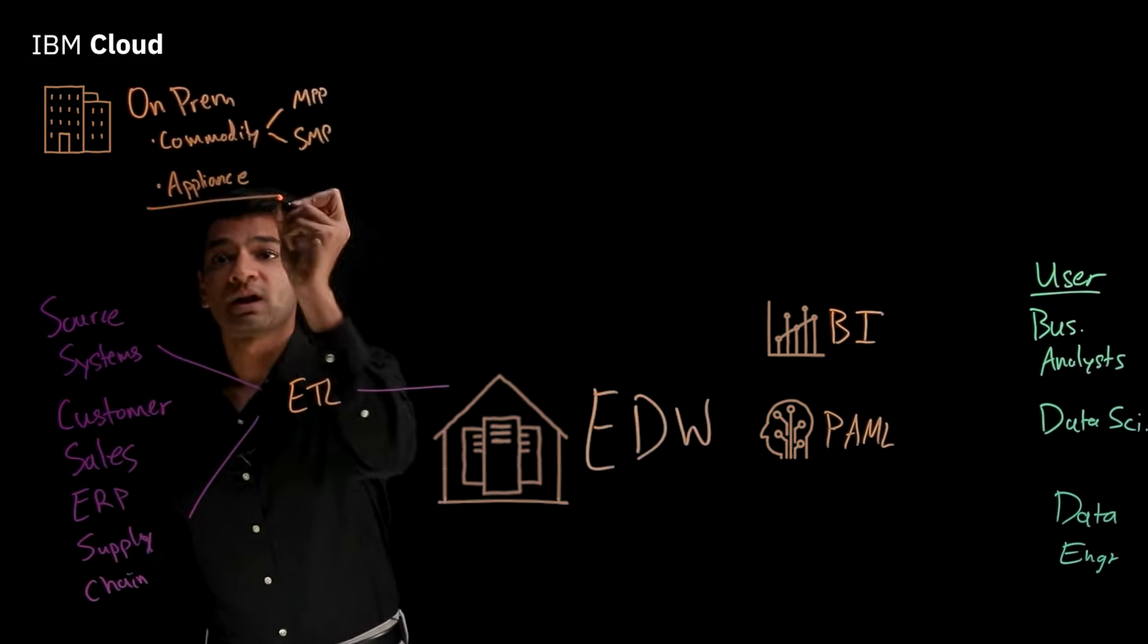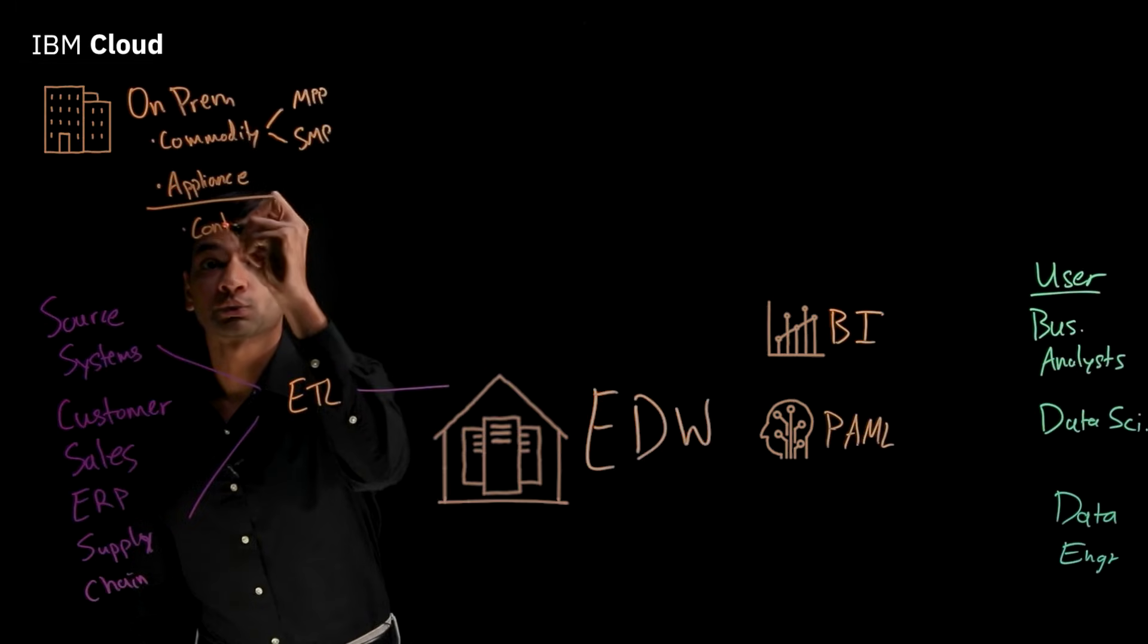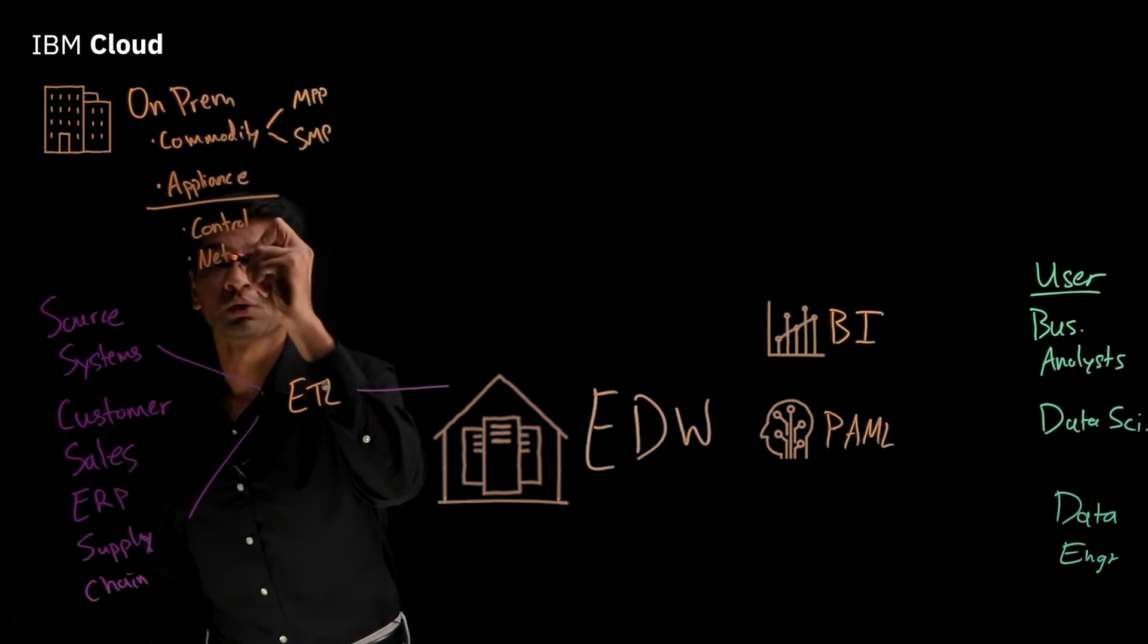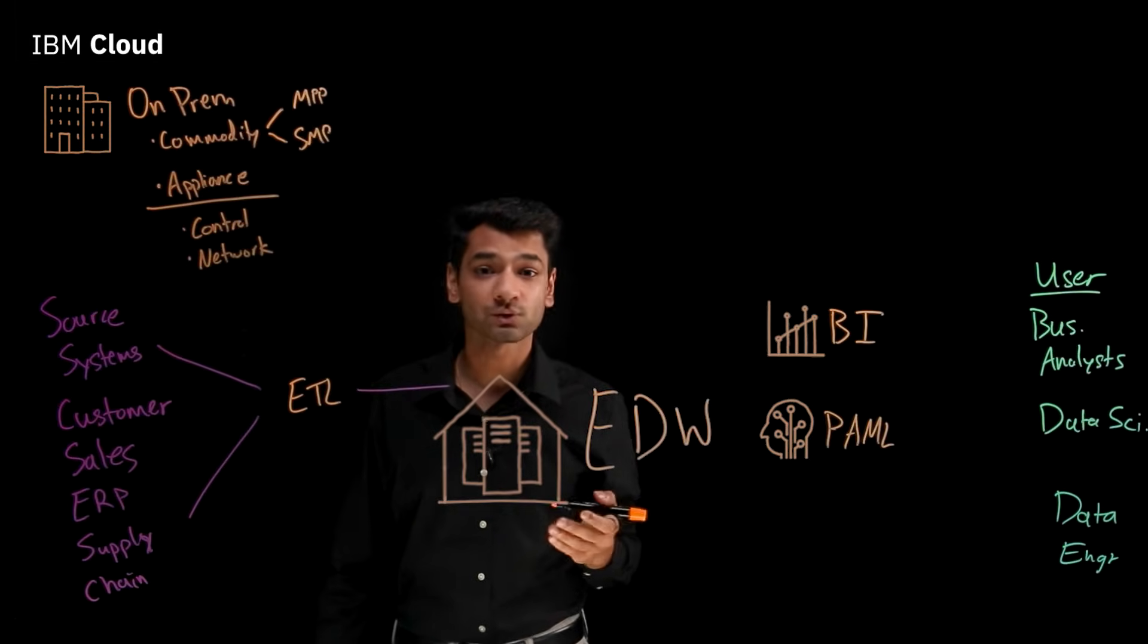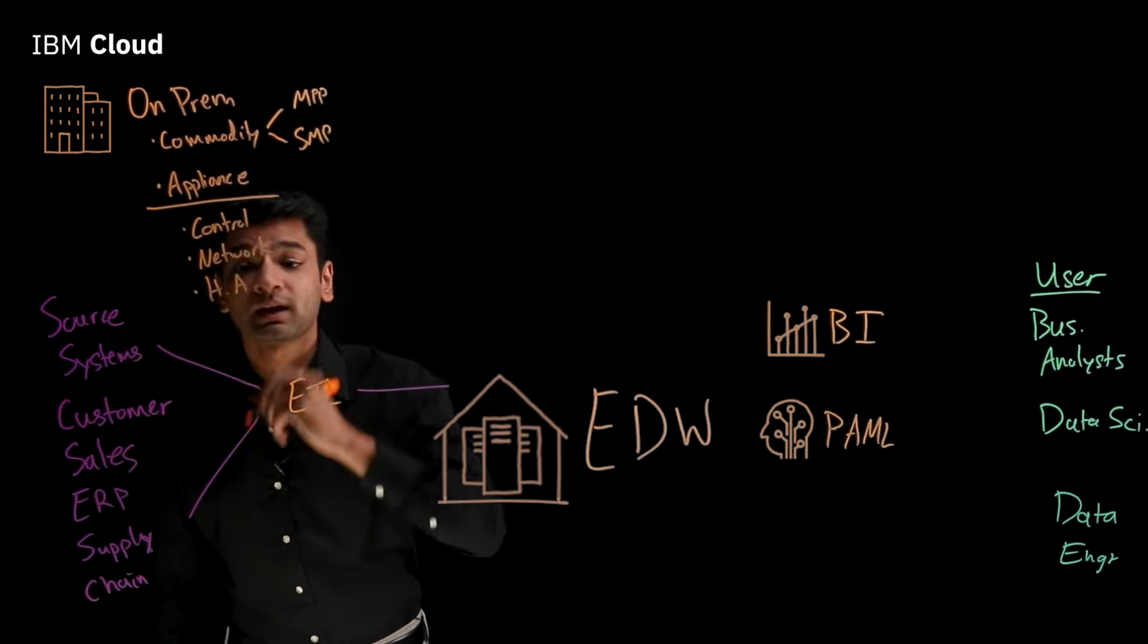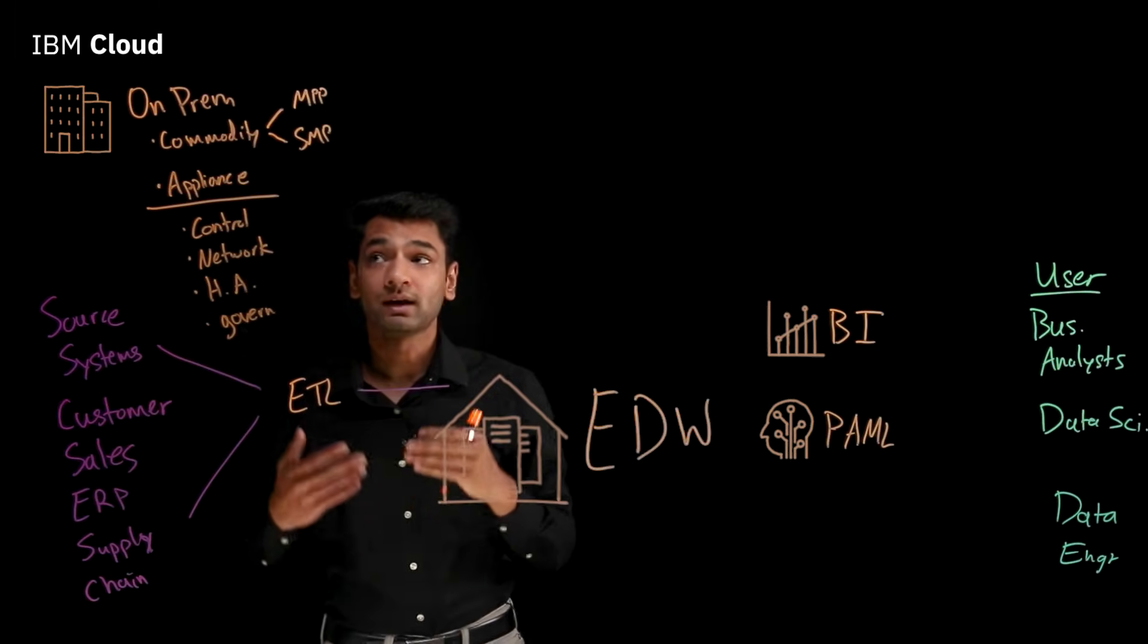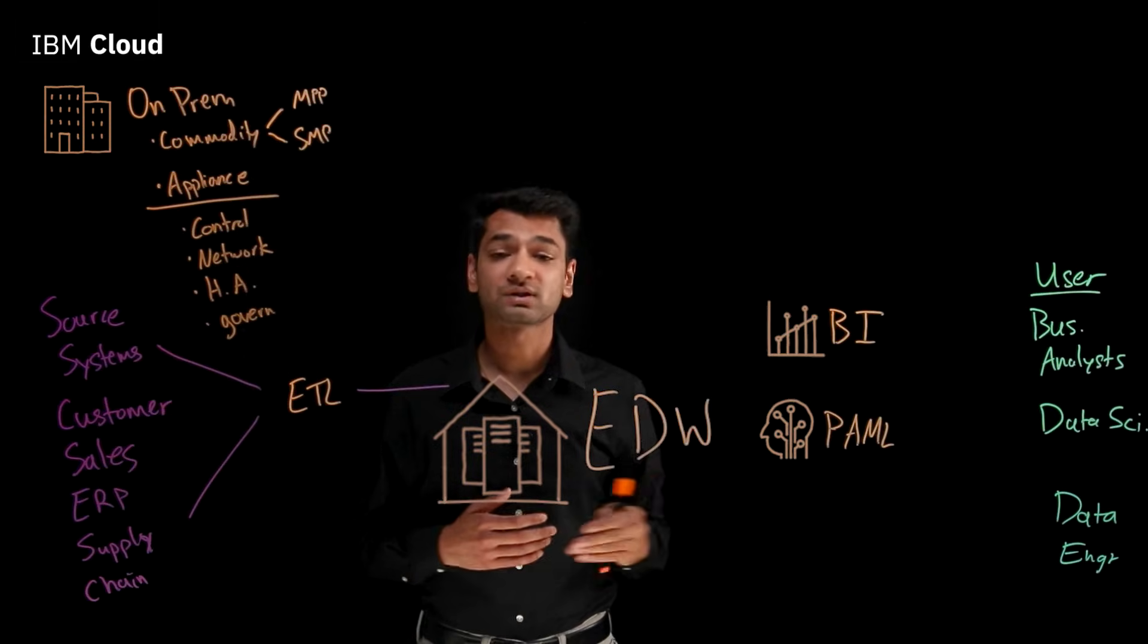What are some of the benefits of having an on-prem data warehouse? First, you get to maintain complete control over the entire tech stack. Second, you can leverage your local network speeds and perhaps avoid some bandwidth challenges typically associated with the cloud. You can also leverage high availability and maintain strict governance and regulatory compliance. But on the other hand, an on-prem data warehouse does come with an upfront investment and the need for ongoing support and maintenance.